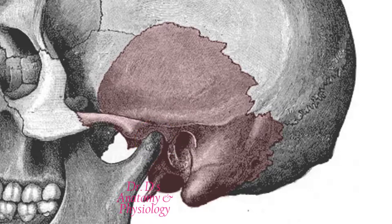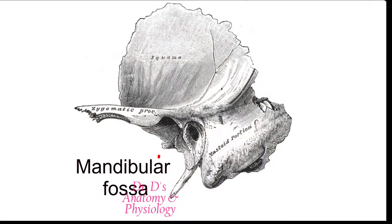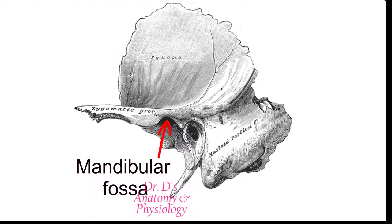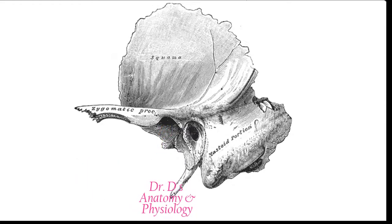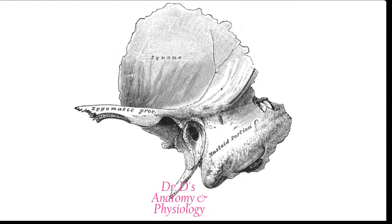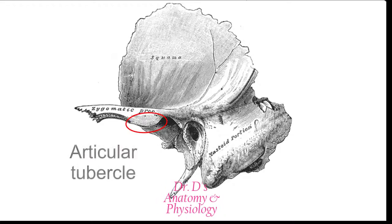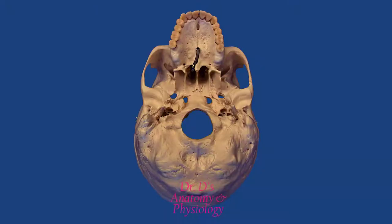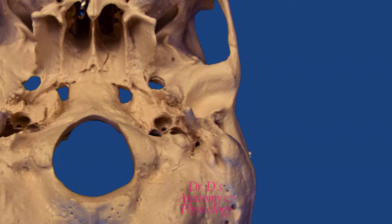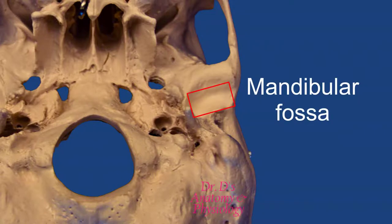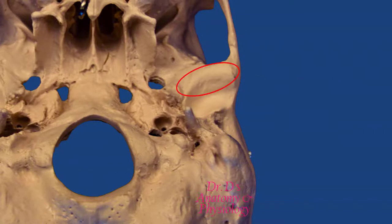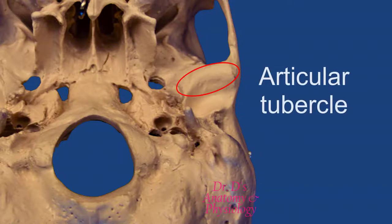Associated with the zygomatic arch, you're going to find the mandibular fossa, which is going to be the temporal component of the temporomandibular joint. It's going to articulate with the condyloid process of the mandible. Anterior to this fossa, you're going to see a swelling or an enlargement referred to as the articular tubercle. In an inferior view of the skull with the mandible removed, you can see the mandibular fossa and, anterior to it, the raised area which is the articular tubercle.